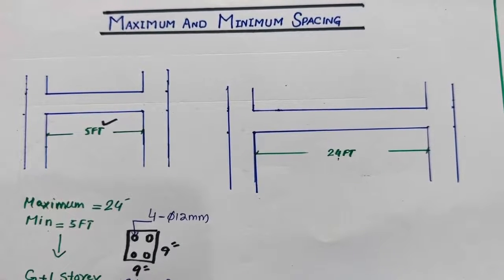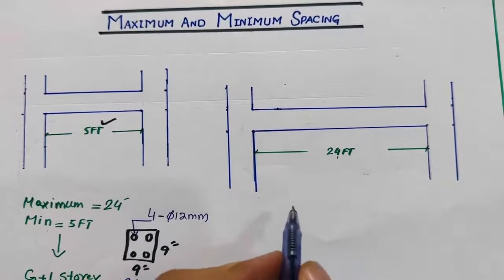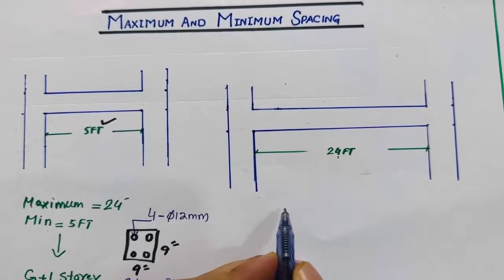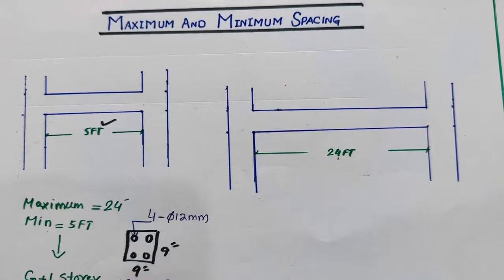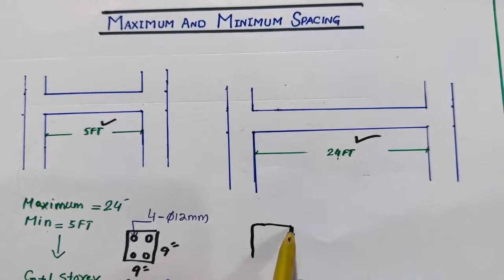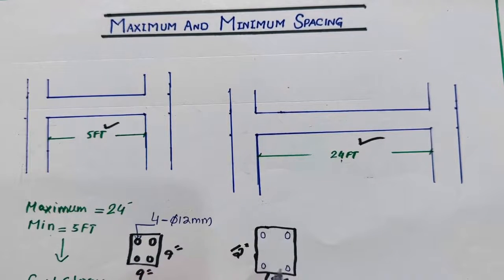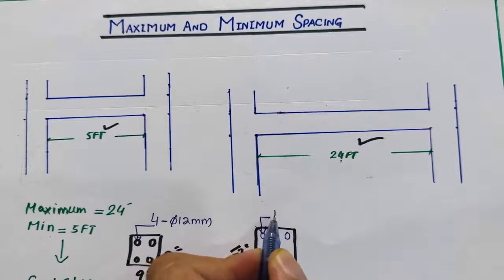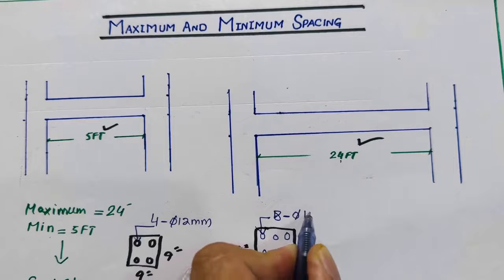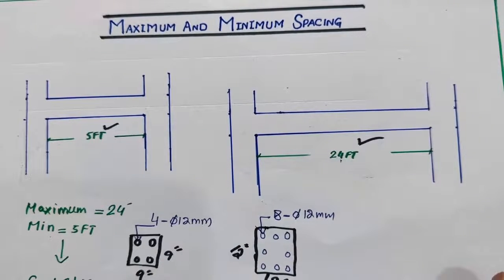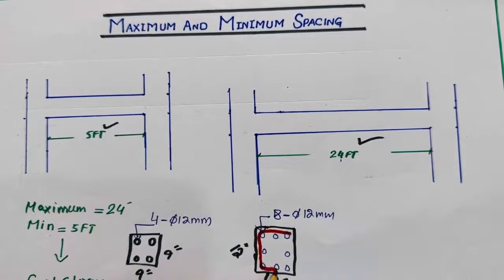If the span between two columns is 24 feet, what should be the size of the column? The size of the column should not be less than 9 by 12 inches — that is the minimum — but I recommend the column size for 24 feet should be 12 by 12 inches. Use eight bars with a diameter of 12 millimeters — eight numbers of bars, 12mm diameter.